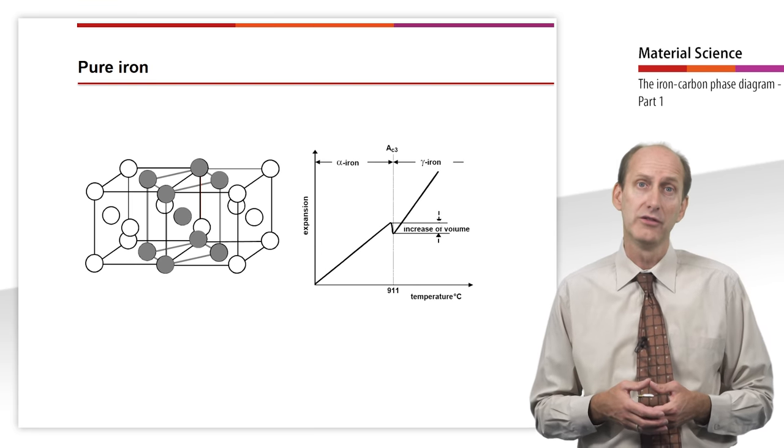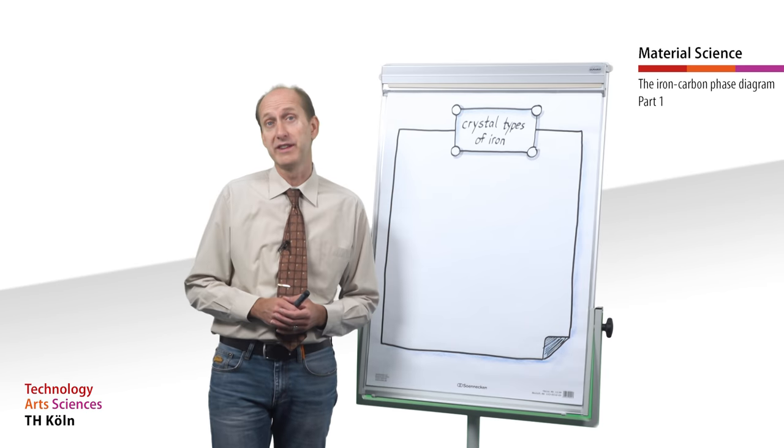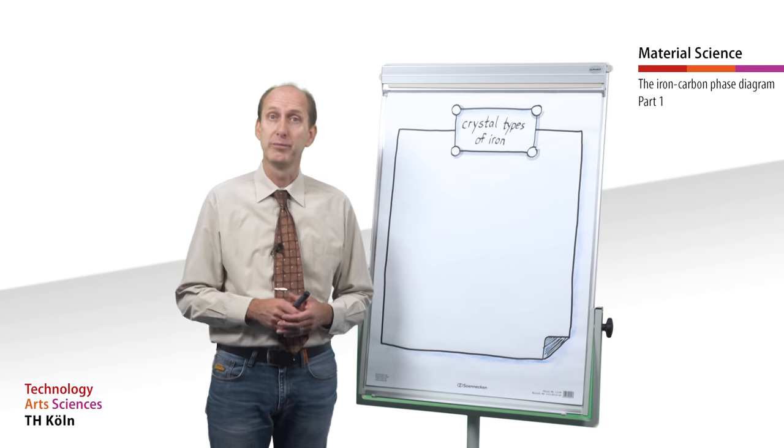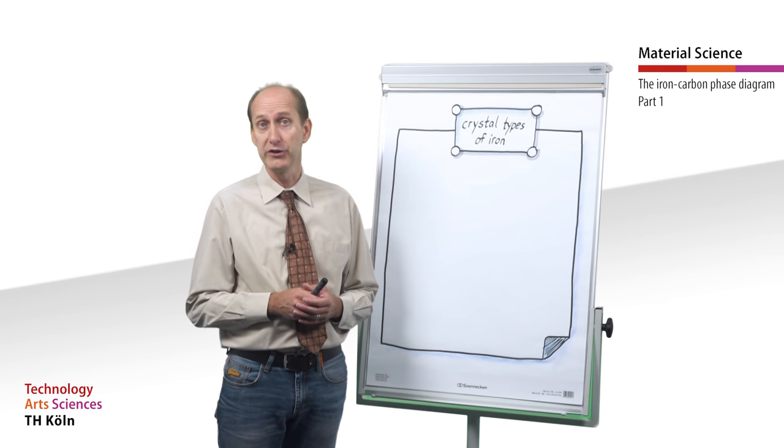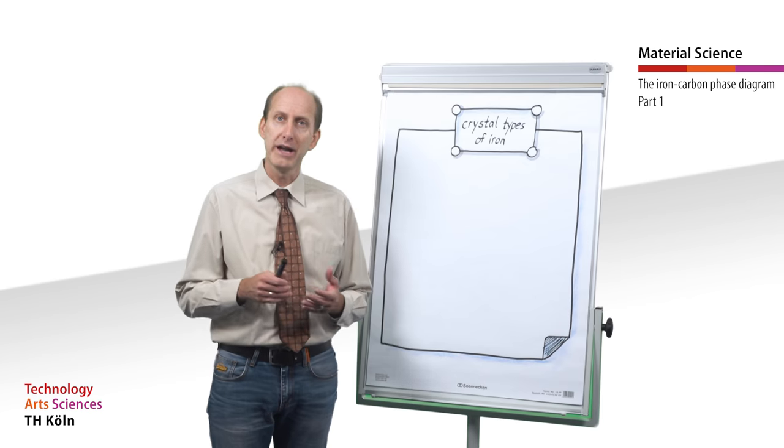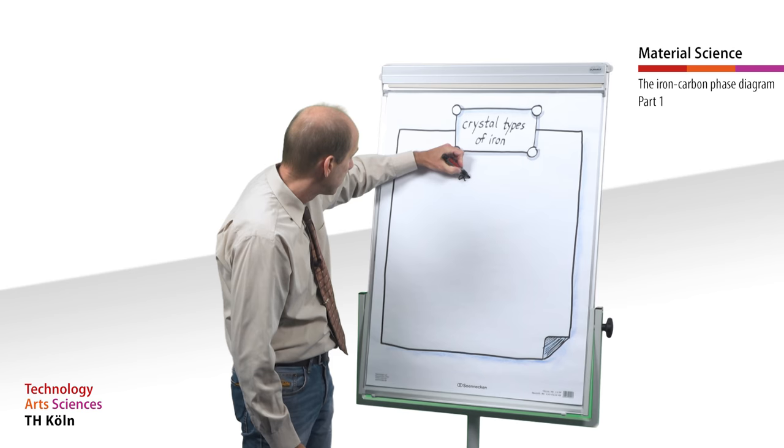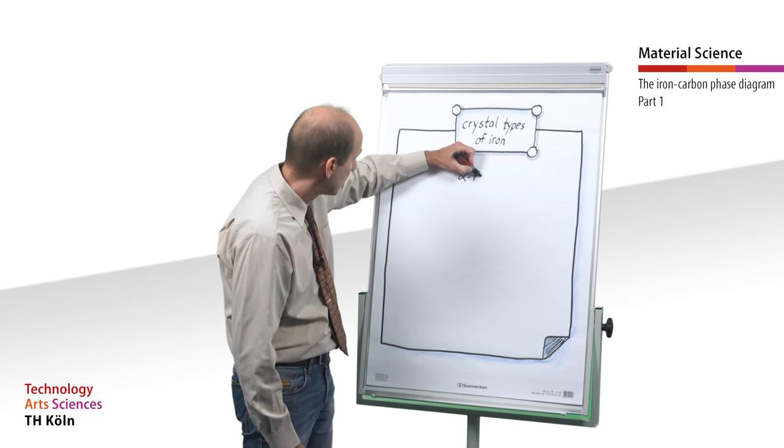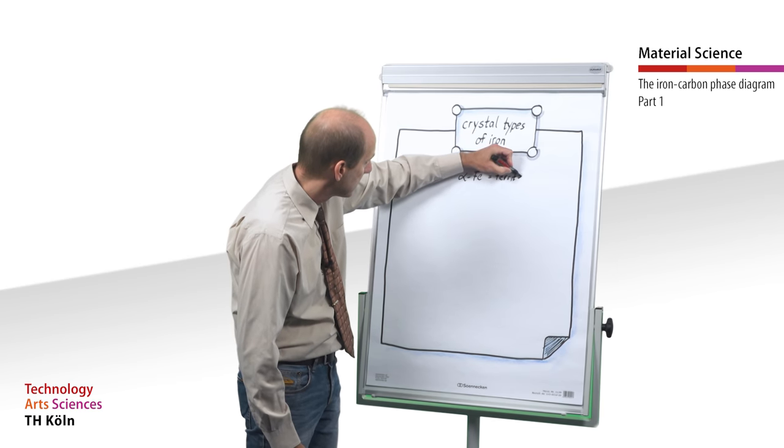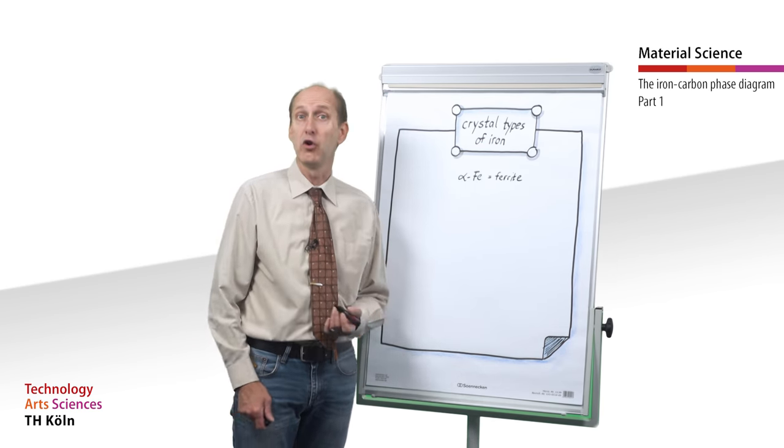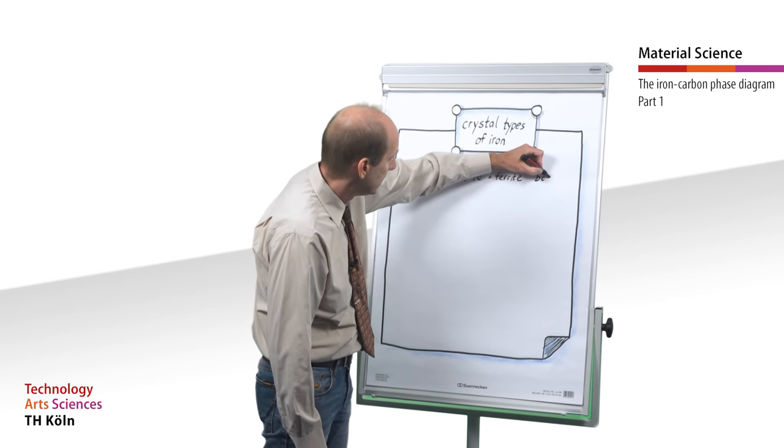At the same time, this results in a measurable increase in volume. Of all the crystal types of iron, two are of particular importance for steels. At room temperature and at lower temperatures, the properties and the behavior of steel are determined by the alpha iron. It has, as we have already seen, a body-centered cubic lattice.